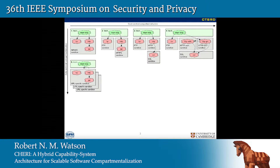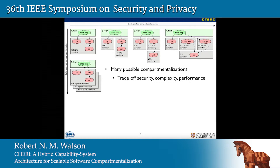One of the problems with software compartmentalization is that there is actually no single compartmentalization. We often speak of an application as being simply privilege separated or compartmentalized, but actually you get a range of design choices and trade-offs between performance, security, and complexity. If we want to increase security by making the compartmentalization more granular, we're going to have to pay a cost in terms of complexity and performance.